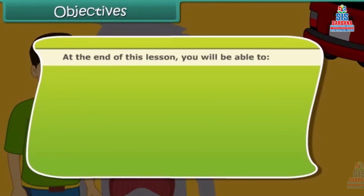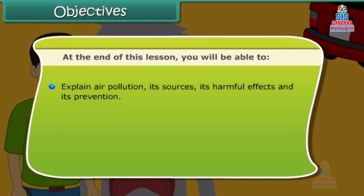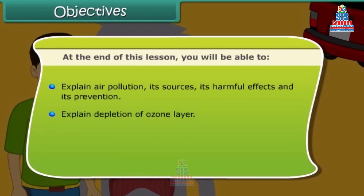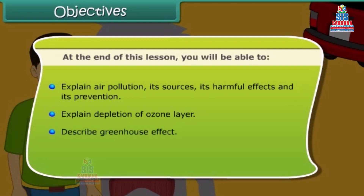At the end of this lesson, you will be able to: explain air pollution, its sources, its harmful effects and its prevention; explain depletion of ozone layer; describe greenhouse effect; and explain the formation of acid rain.